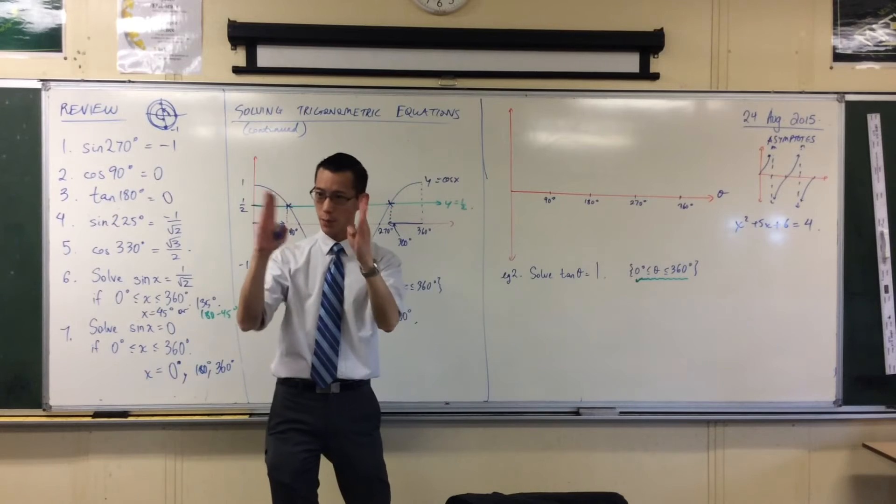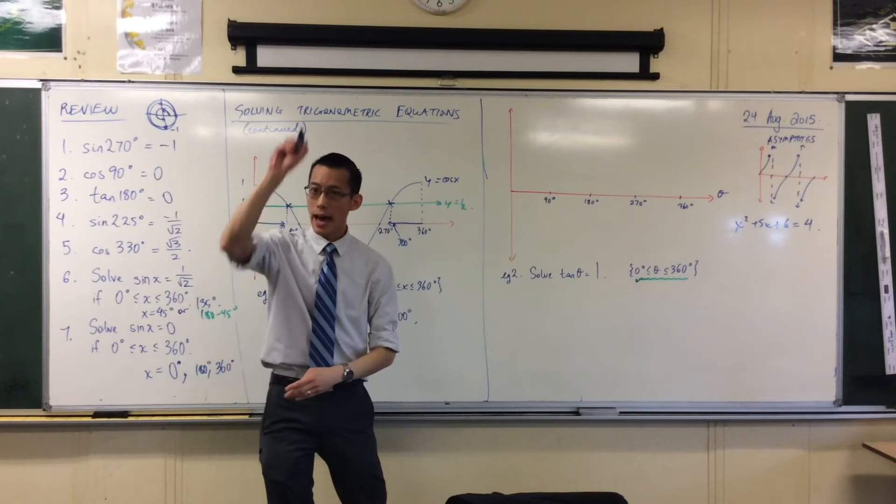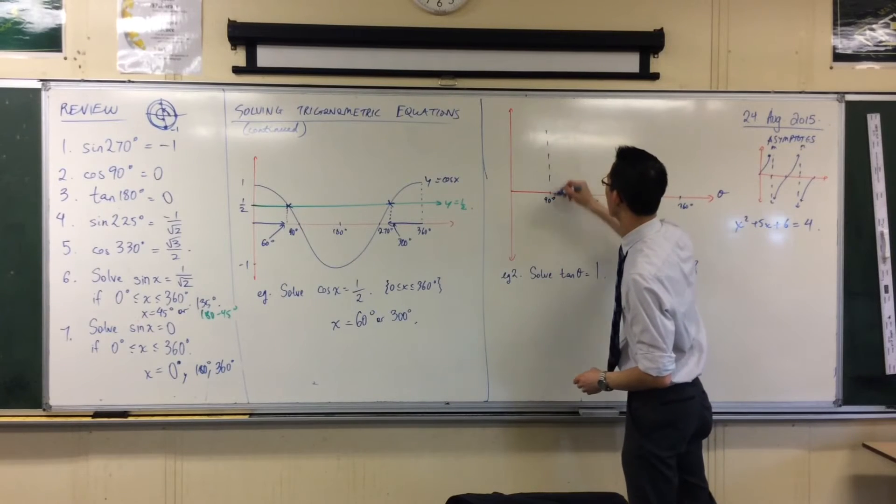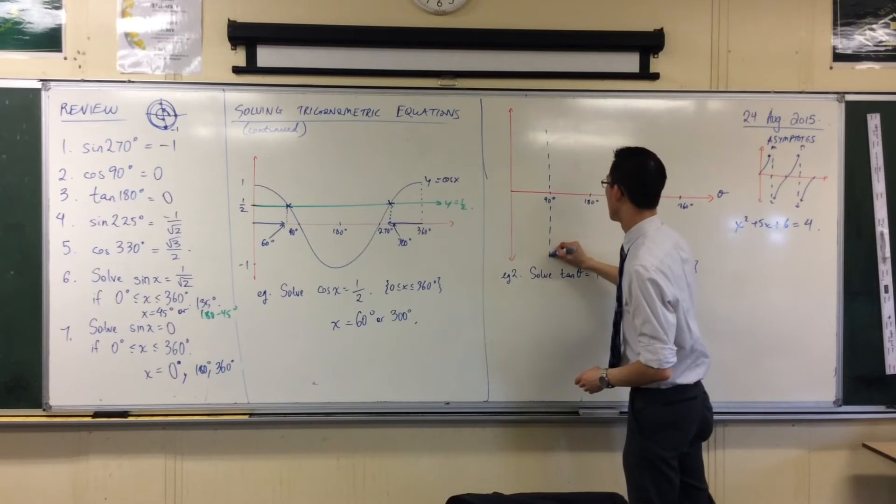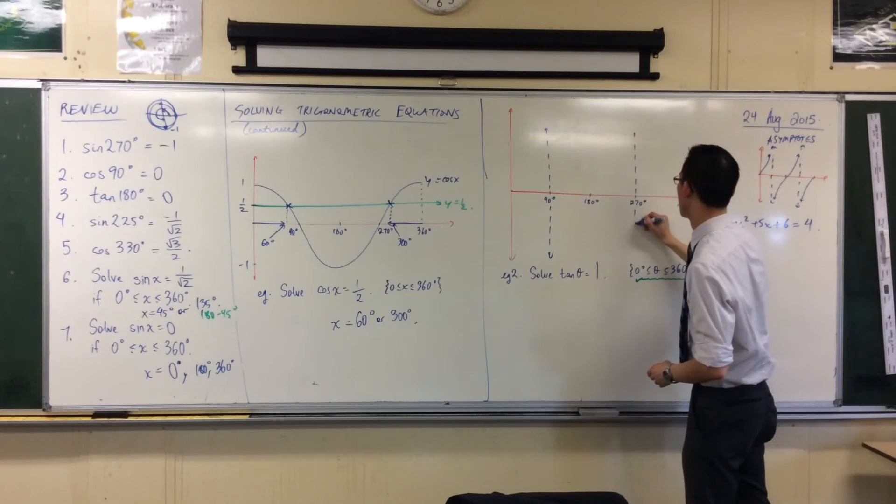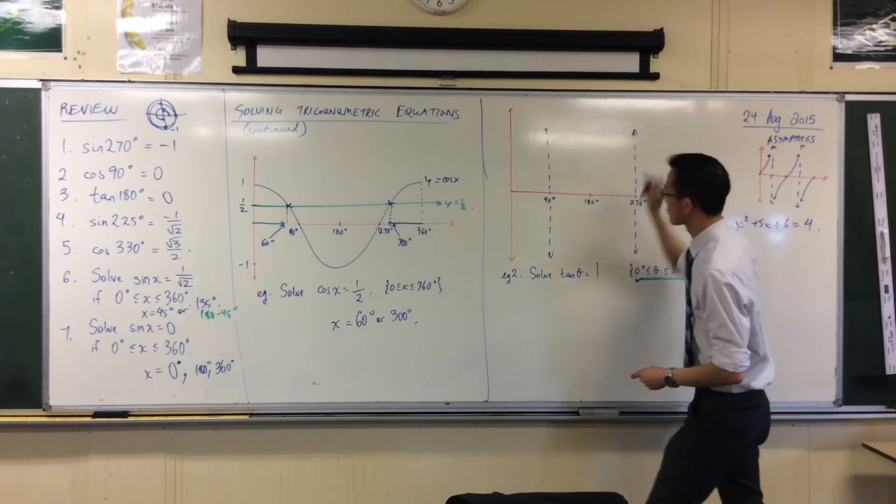So those 90 and 270 we just put in, maybe get your ruler out and let's put those dotted lines, those asymptotes, through there.